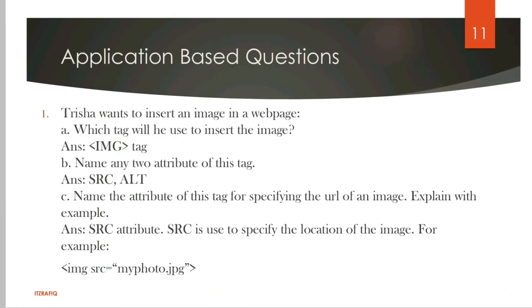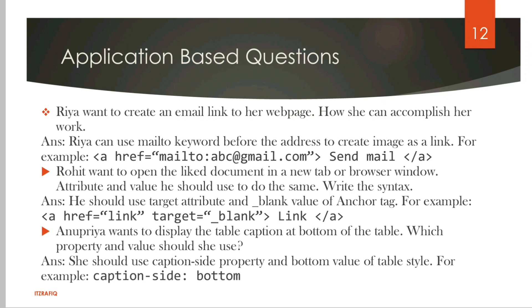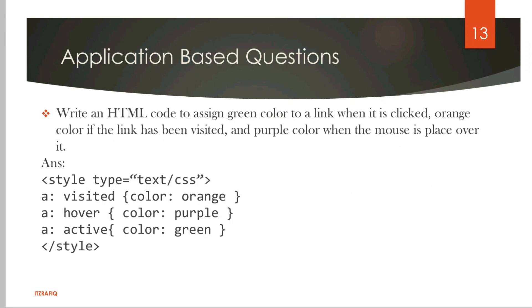Then Trisha wants to insert an image to a webpage, so which tag should she use? IMG tag. Two attributes: SRC and ALT. Name the attribute used for specifying the URL of an image and explain. SRC specifies the location of the image, for example: IMG SRC myphoto.jpg. Another application question: Ria wants to create an email link, so she should use A HREF mailto abc@email.com. Rohit wants to open the link document in a new browser window, so he should use A HREF with target equals blank. Anupriya wants to display the table caption at the bottom, so she should use caption-side bottom.